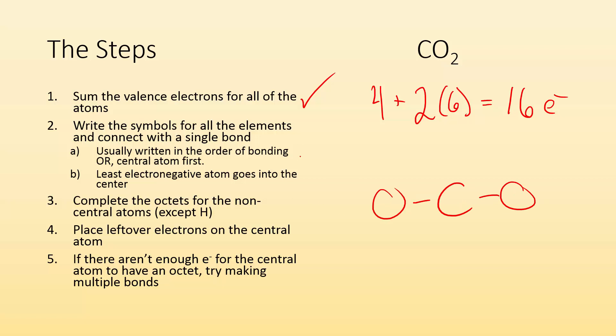Now complete the octets for the non-central atoms. Two, four, six, two, four, six, and the bond is eight. So hold on. Wait a minute. If there are placed leftover electrons on the central atom, I've already used all my electrons, but there's a problem. This carbon only has four electrons. It doesn't have an octet. So what am I going to do?